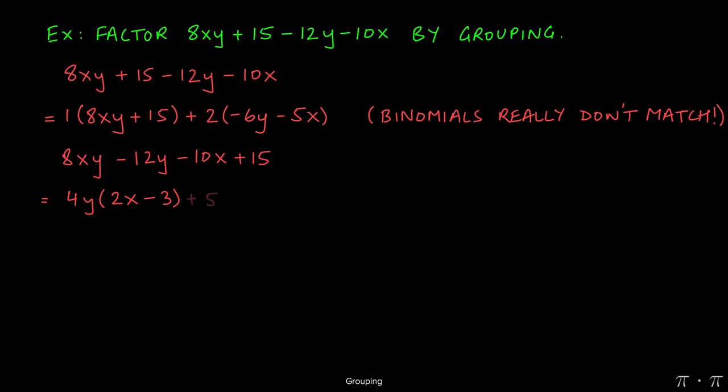For the last two terms, we can factor out a 5, which goes evenly into negative 10 and into 15. Dividing negative 10x by 5 gives us negative 2x. Dividing 15 by 5 gives us a positive 3.